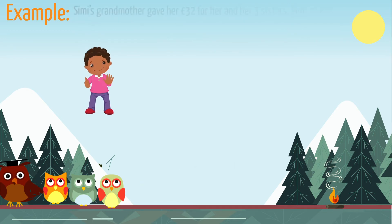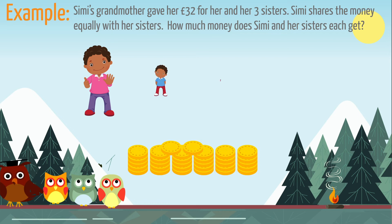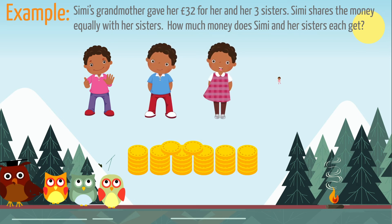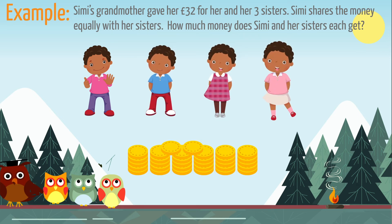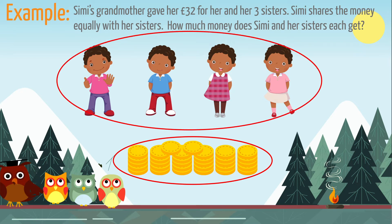Simmy's grandmother gave her 32 pounds for her and her 3 sisters. Simmy shares the money equally with her sisters. How much money does Simmy and her sisters each get? 32 pounds shared equally between 4 people.